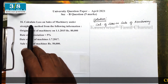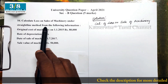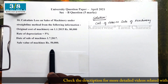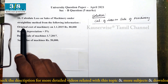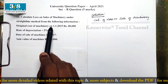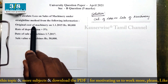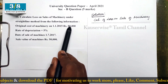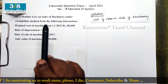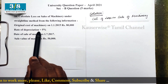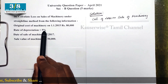In the problem, calculate loss on sale of machinery under straight line method from the following information. This is a 5 mark question. The original cost of machinery on 1st January 2015 is 80,000. The rate of depreciation is 5%, so 5% on 80,000 every year.